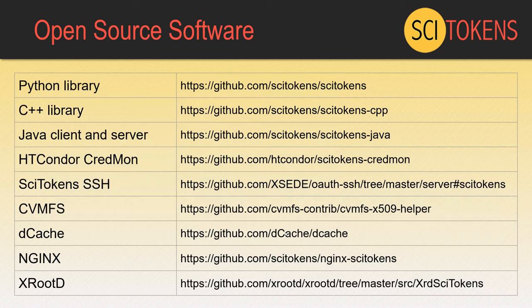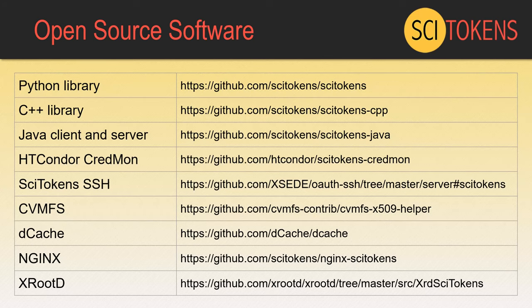SciTokens is implemented by a number of open source software packages, including Python, C++, and Java. We also have the HT Condor CredMon, which supports SciTokens, and the Xcede OAuth SSH which now supports SciTokens as an authentication method. Additionally, we have four examples of integrating SciTokens for authorization to data: CVMFS, DCache, NGINX, and XrootD. For CVMFS that capability has been added upstream to the CVMFS contrib directory, and for DCache the DCache developers implemented the SciTokens support themselves — a nice independent, interoperable implementation.